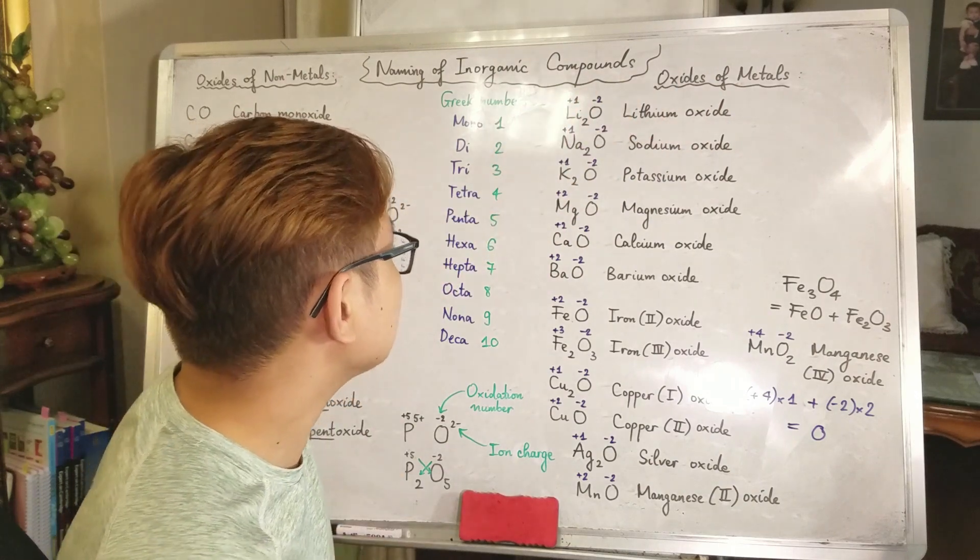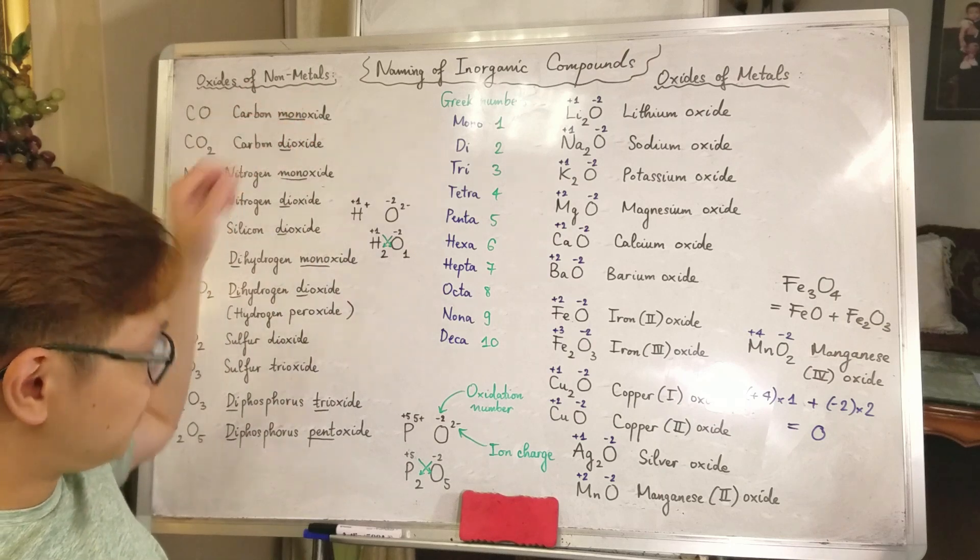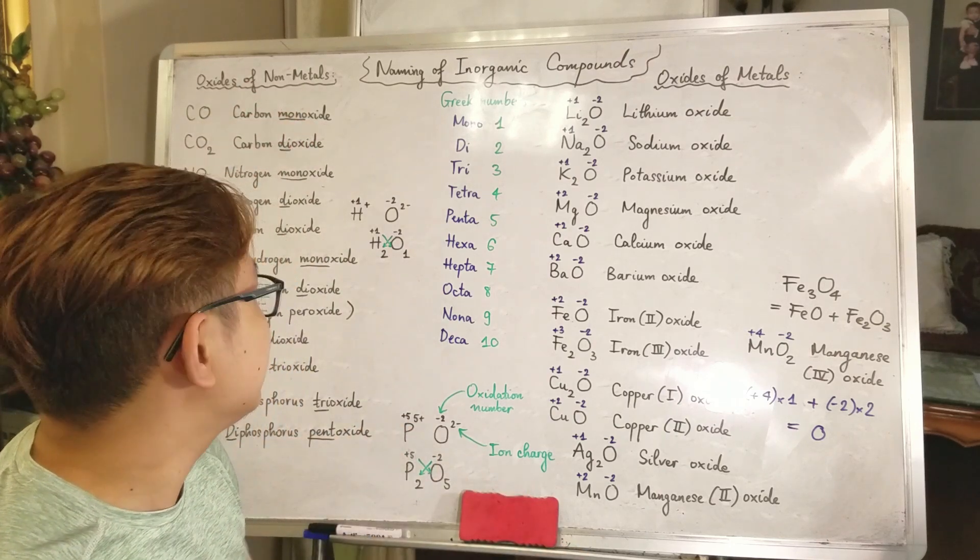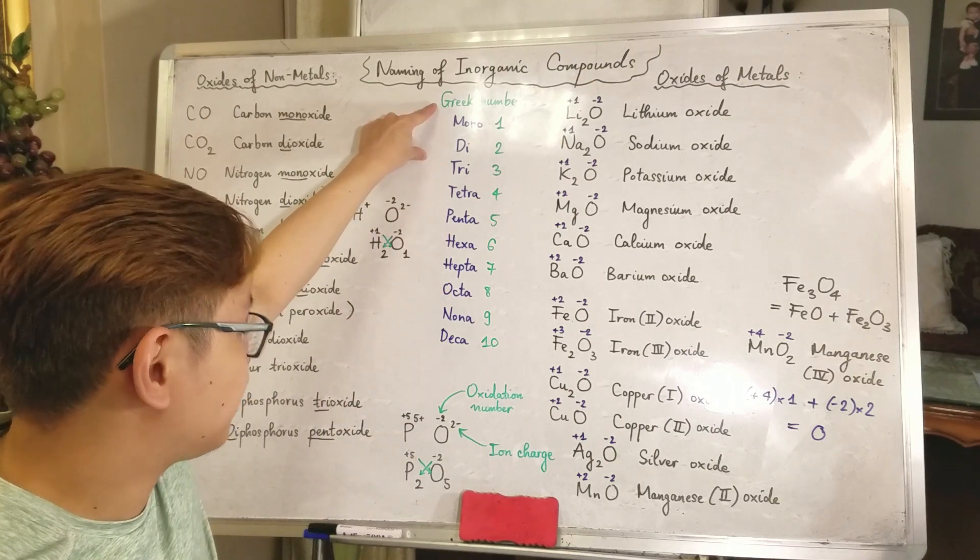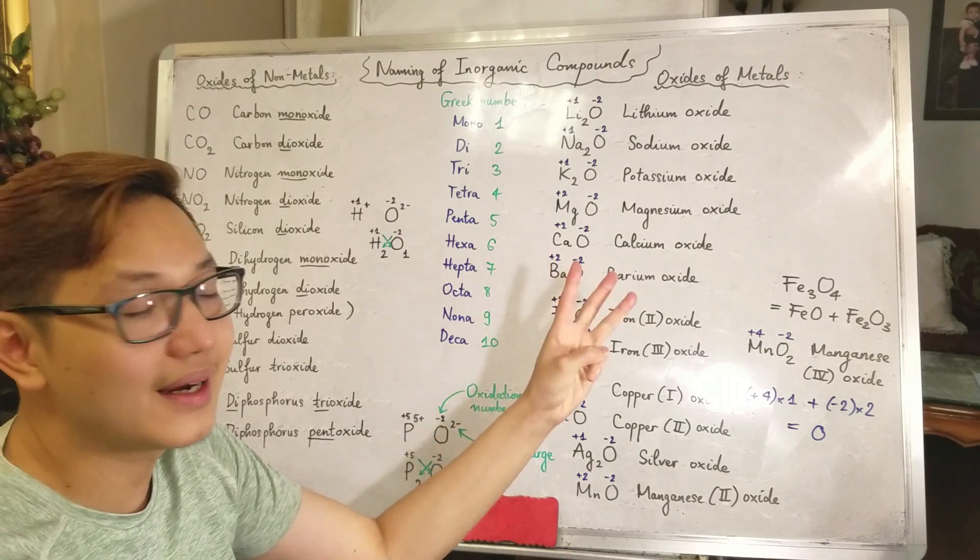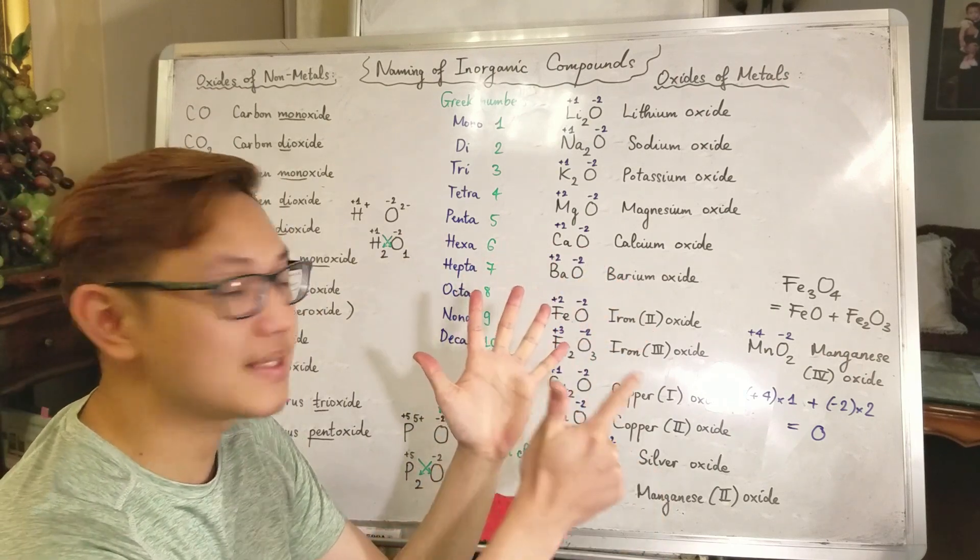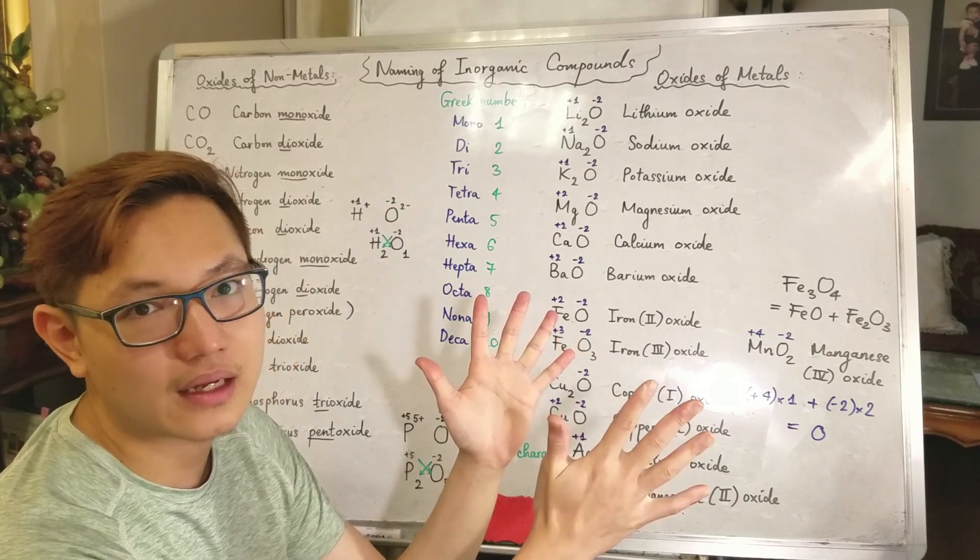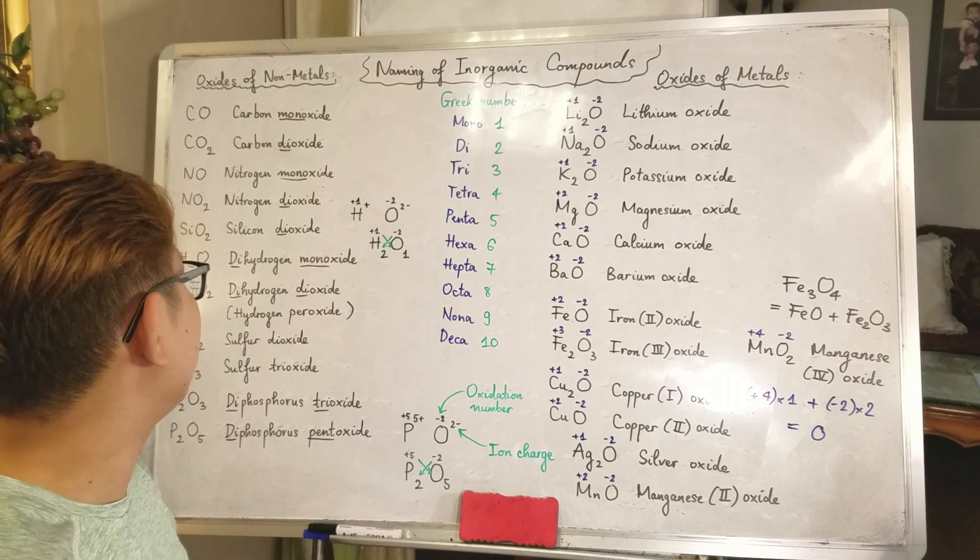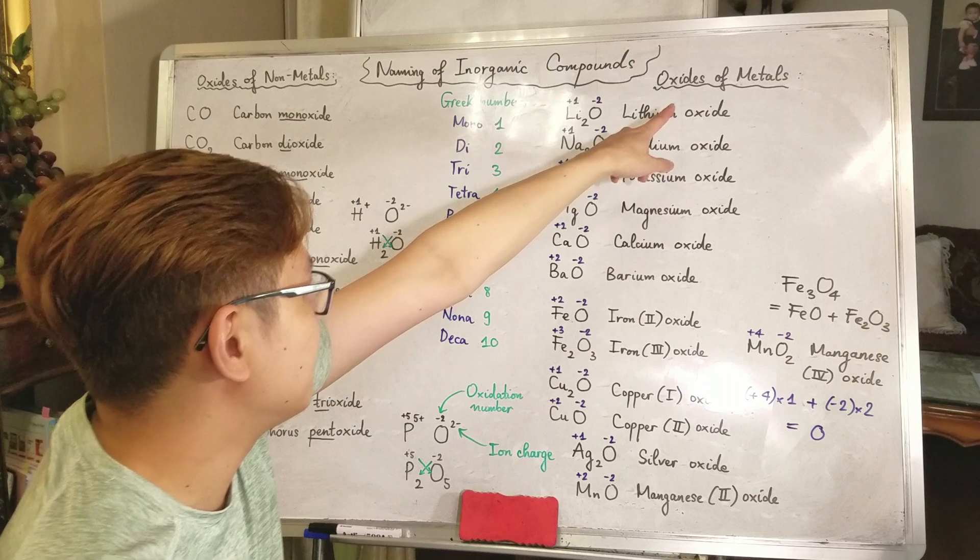First thing first, to name things you need to learn rules. So what are the rules here? Basically for oxide of metals it's much more simpler, but for non-metal you have to use the numbering system. In this case we use Greek numbers. For example: 1 mono, 2 di, 3 tri, 4 tetra, 5 penta, 6 hexa, 7 hepta, 8 octa, 9 nona, and 10 deka. To name the oxide of non-metal you have to use numbers, but oxide of metal you don't have to.